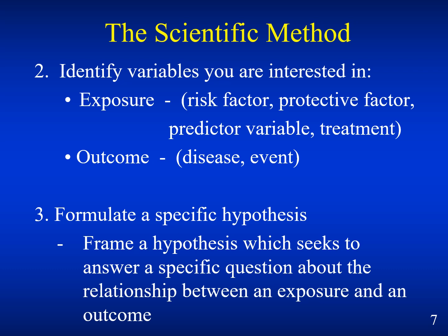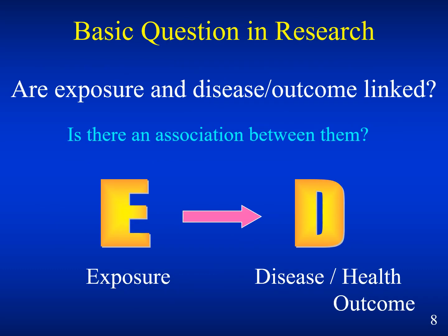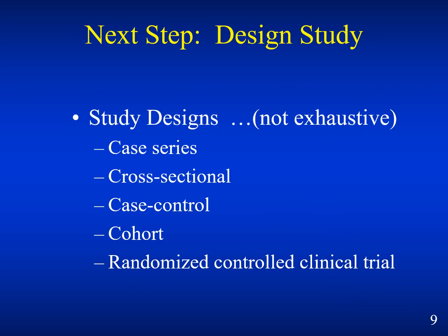There are many ways to frame a hypothesis depending on your research topic. The basic questions in research ask: are exposure and disease outcome related? Is there any association between exposure and health outcome? This is common in both infectious diseases and non-infectious diseases such as hypertension and diabetes. The next step is to design a study. Study designs include case series, cross-sectional, case-control, cohort, and randomized control clinical trials, which we will review in a later lecture.